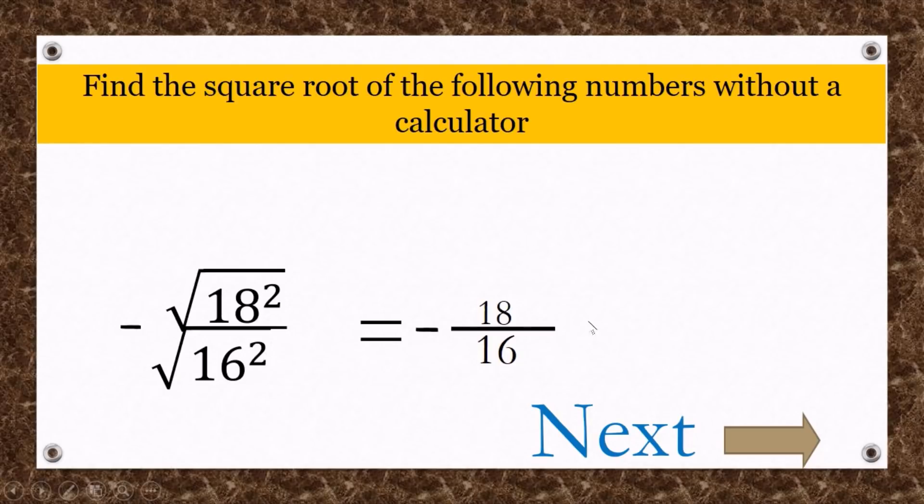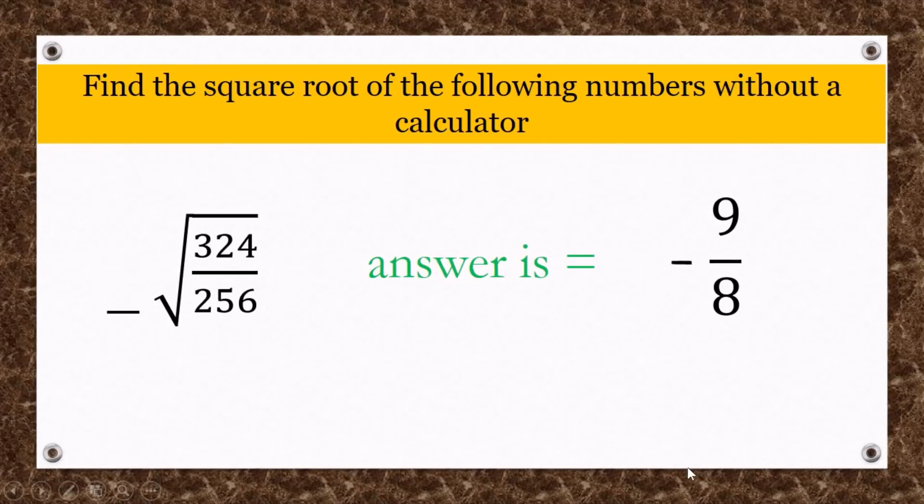Right now we can divide this. Because 18 divided by 16, you cannot divide those two numbers. What you're going to do is divide it by two. When you divide 18 by 2, you got 9. When you divide 16 by 2, you got 8. That's how.